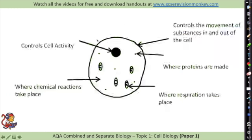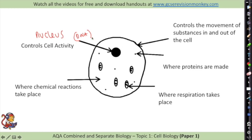With animal cells first of all you need to label various different parts. You need to know this part here which controls the cell activity and that is called the nucleus. The outside of the cell controls the movement of substances in and out of the cell and that is the cell membrane.